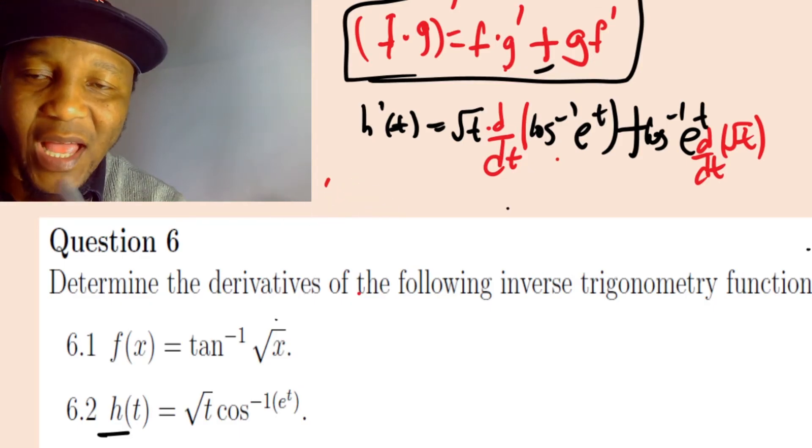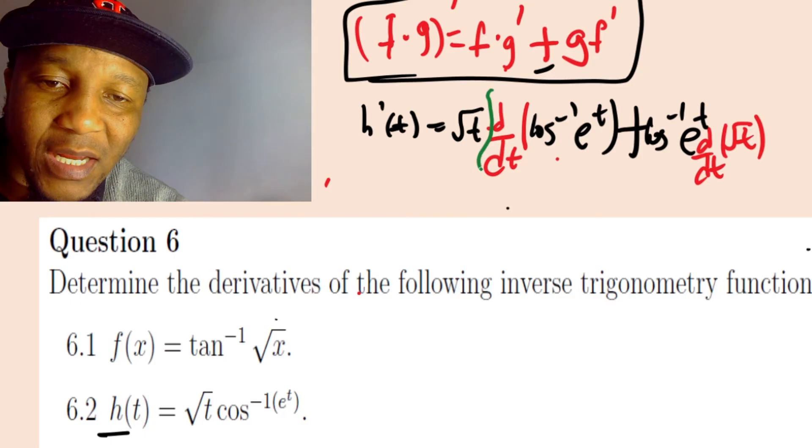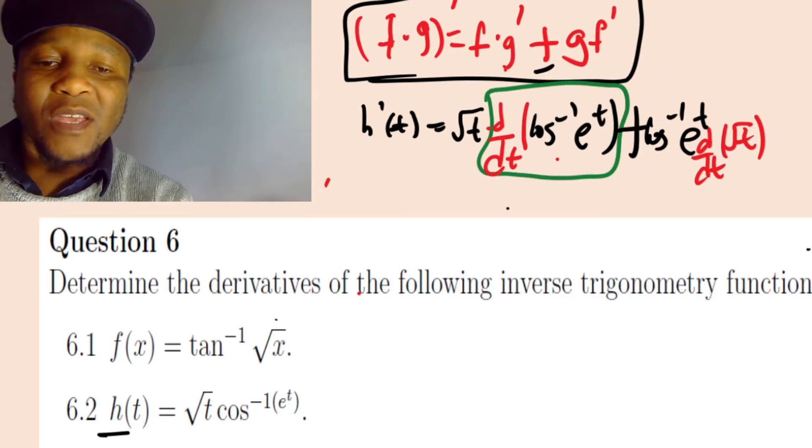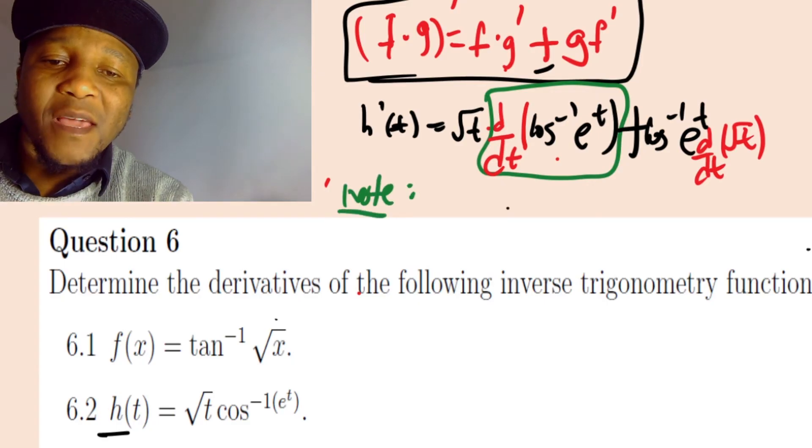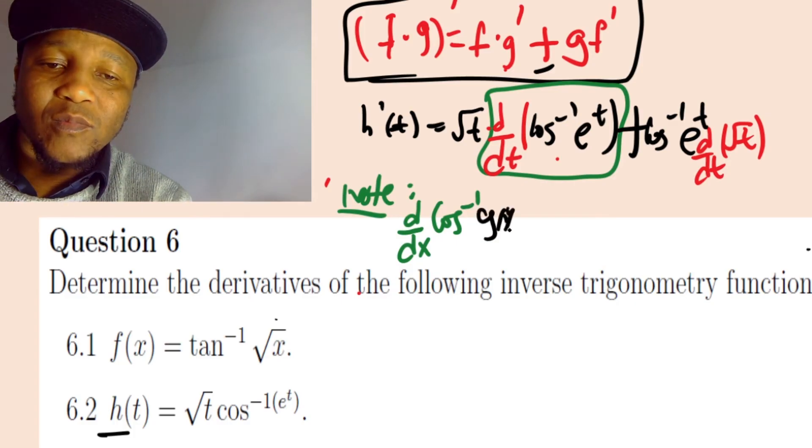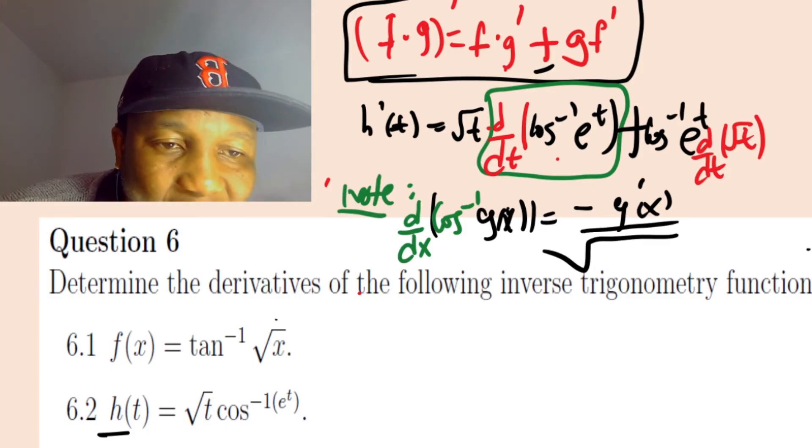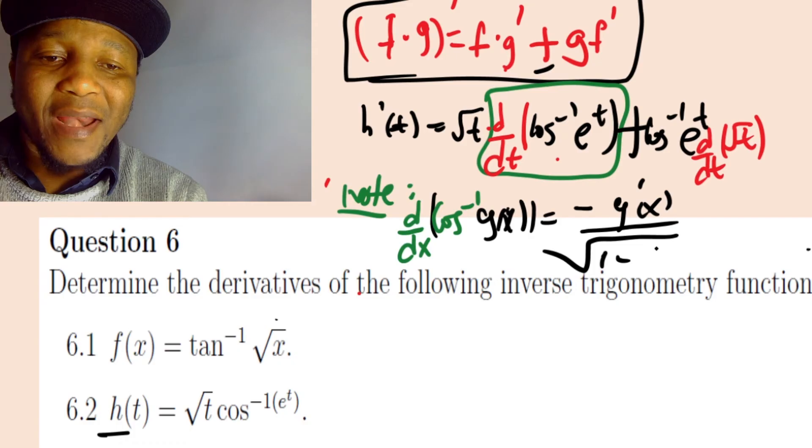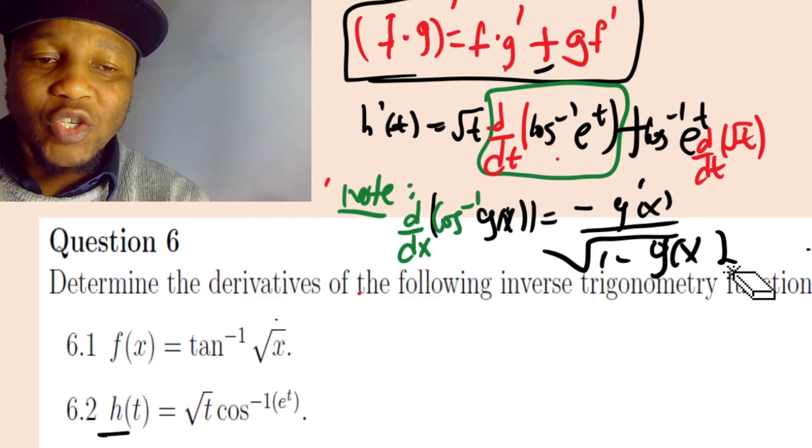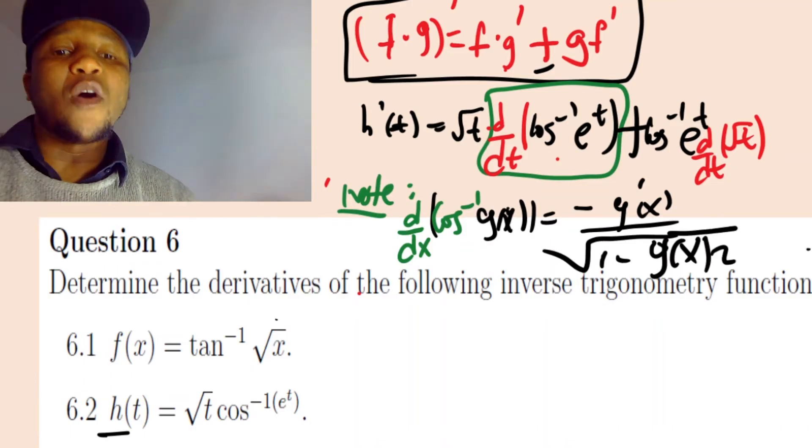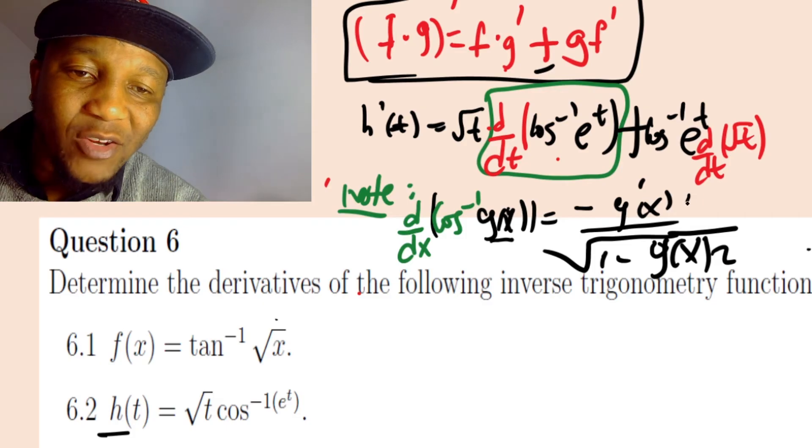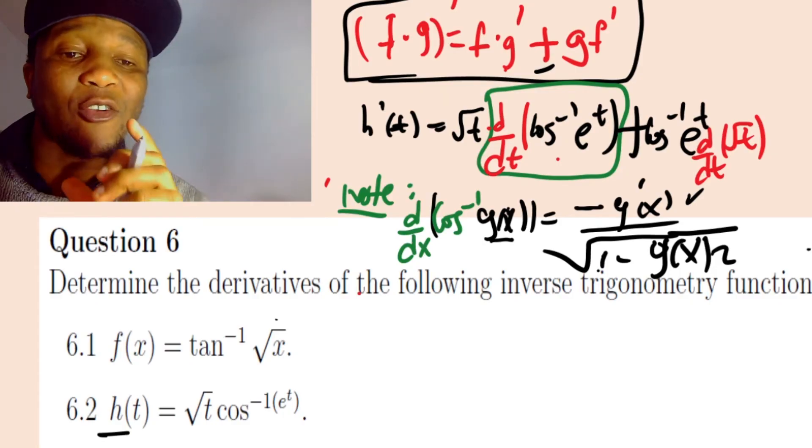Before we continue, I need to show you how to derivate cos inverse. If you have cos inverse of g(x), you write it as negative, derivate your function on top, then after that you say 1 minus your function squared. These are laws of trigonometry.